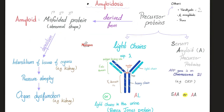So I start with a precursor protein. From the precursor protein, we get the misfolded protein, which is the amyloid protein. It will get deposited into different tissues, such as the interstitium of the kidney. This deposition is not good for you — one example is that it can cause pressure atrophy and organ dysfunction.